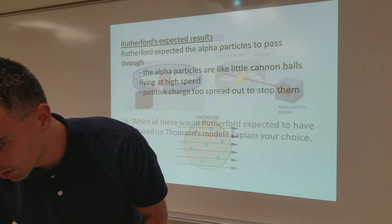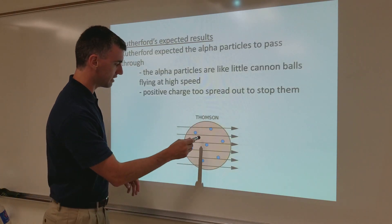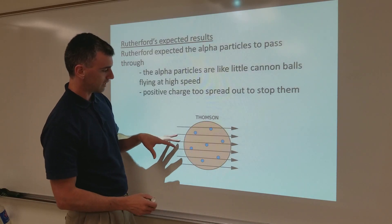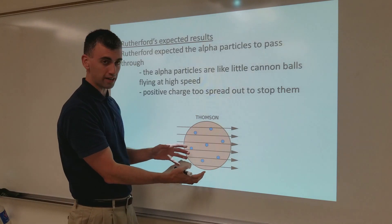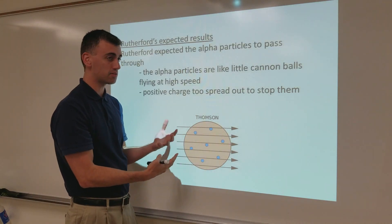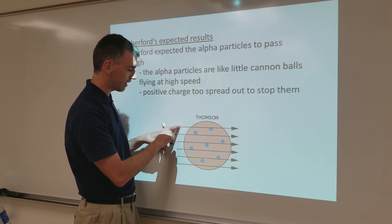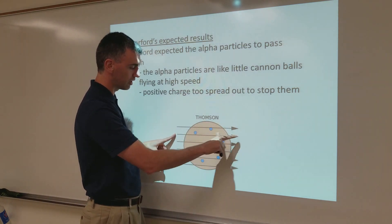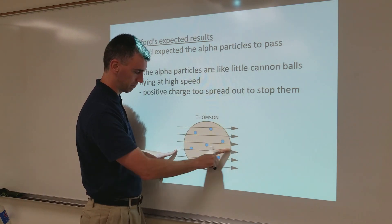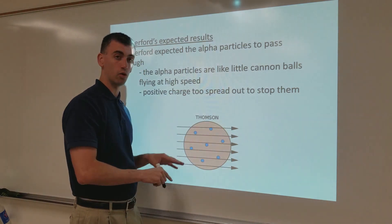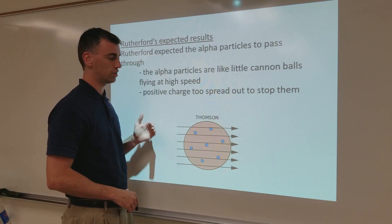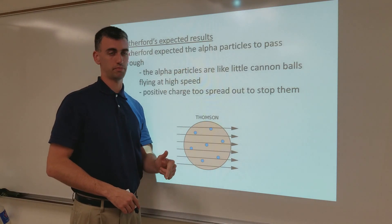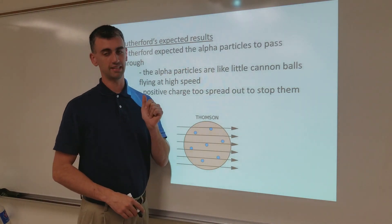And the justification for that, let's see if I can find a good picture, here we go, was here saying that, okay, based on the Pudding model, the positive charge was to spread out to present any kind of an obstacle to these positive alpha particles just going straight through the middle of the atom. So, he expected them to go right through the middle of the atom, undeflected, straight through like a cannonball through a piece of paper.